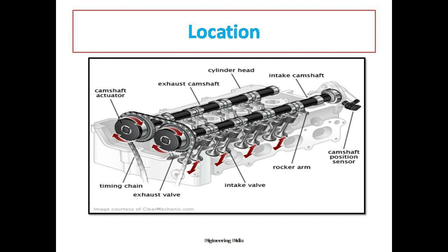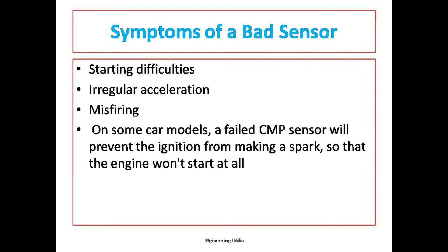If the CMP sensor system goes wrong, what are the symptoms? First of all, starting difficulties. Second is irregular acceleration and misfiring. If the CMP sensor and CKP sensor data don't match, or if one sensor stops working, these are the common problems — you don't know in which cylinder it needs to fire and in which cylinder it needs to inject the fuel, so these problems will occur.